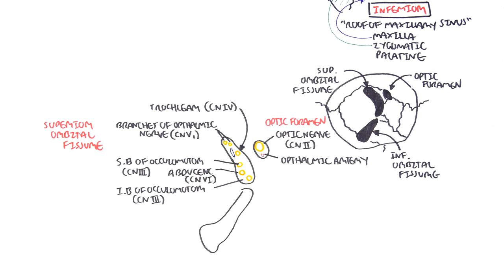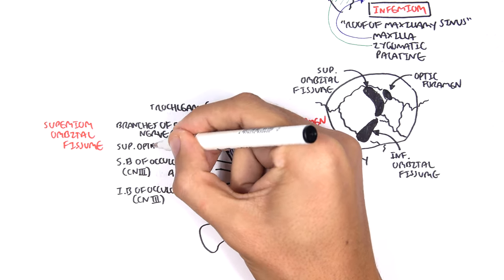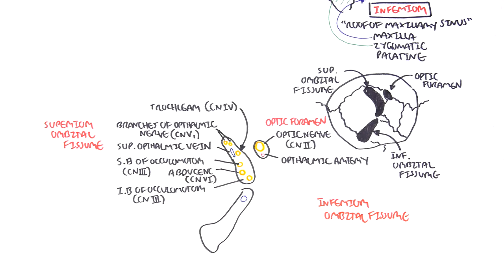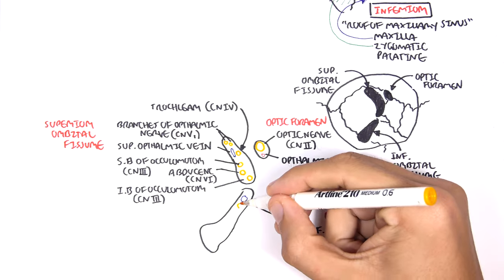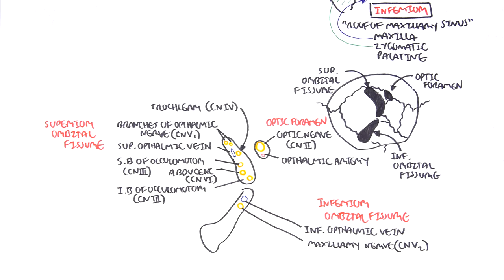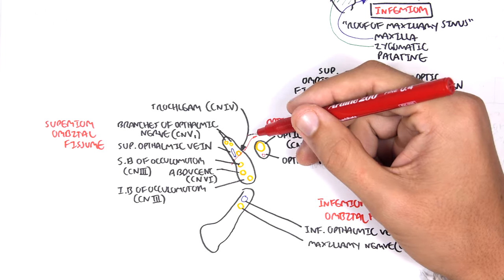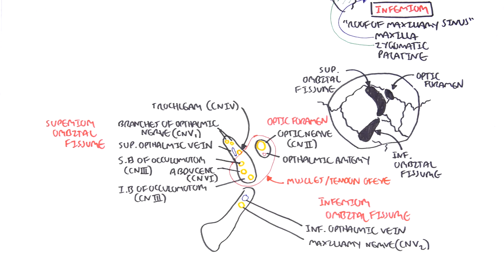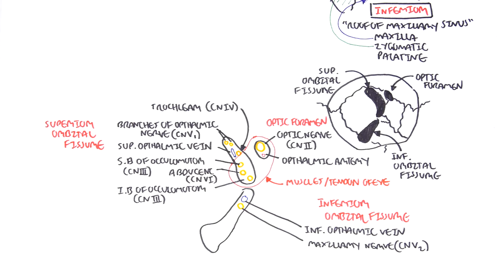The inferior orbital fissure transmits the inferior ophthalmic vein and the maxillary nerve, which is the V2 branch of the trigeminal nerve. The common tendinous ring here represents where the tendons of the eyeball muscles originate. Cranial nerve three, the oculomotor nerve; cranial nerve four, the trochlear nerve; and cranial nerve six, the abducens nerve, supply these muscles — they are motor nerves.